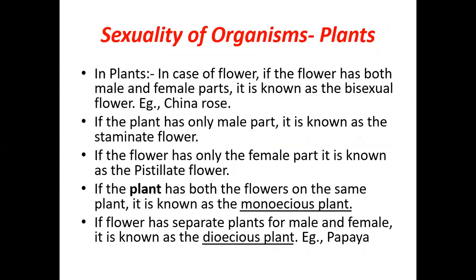To summarize, we have studied three steps of sexual reproduction in plants and animals: the first is gametogenesis, the second is fertilization, and the third is embryogenesis.